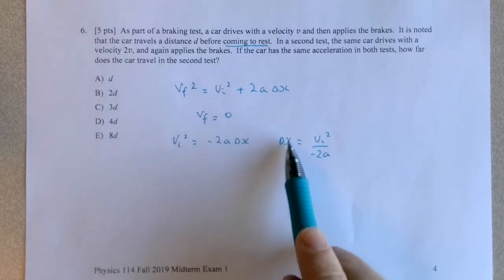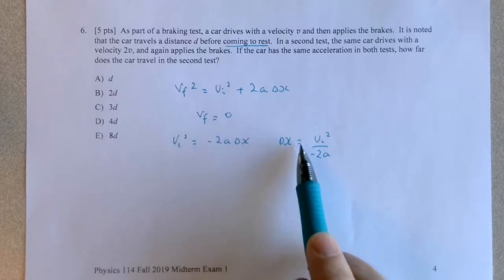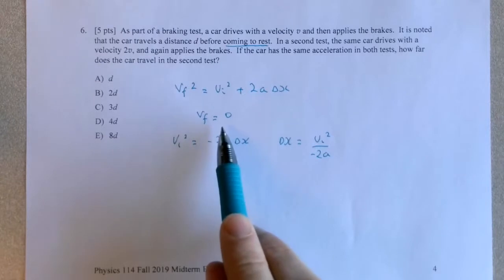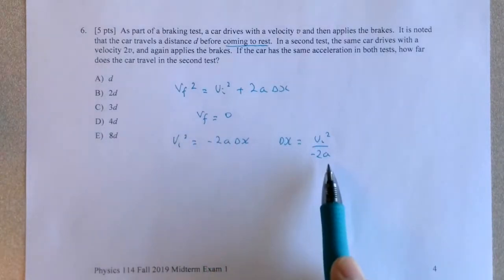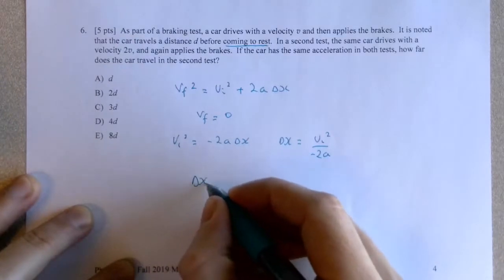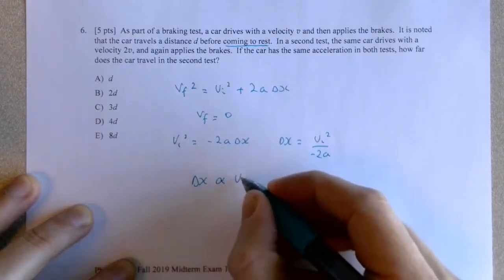But what's important here in this particular question is knowing that the distance delta X traveled is proportional to the square of the initial velocity, assuming the final velocity is 0 and we're assuming in both cases the acceleration is the same.